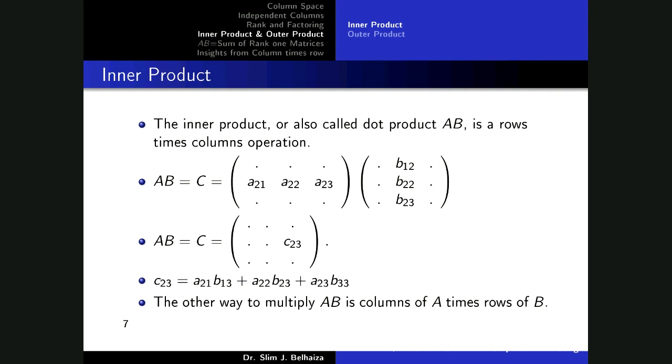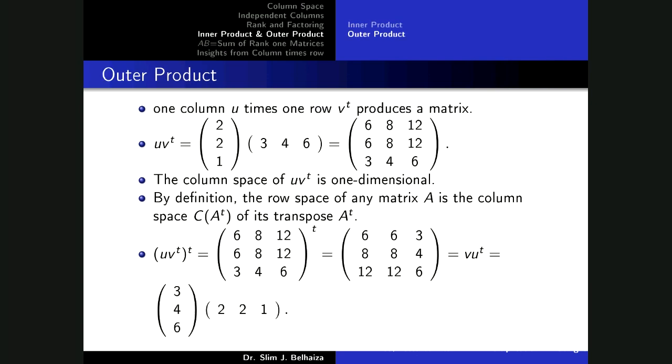Let's proceed to the inner product of two matrices. The inner product, also called the dot product AB, it's a kind of a rows times columns operation. If AB equals C, for example the second row of A multiplied by the second column of B, you'll obtain the element C23, where C23 is just the sum product of the elements of A and B. There is another way to do the multiplication, and this is the main focus of this part.